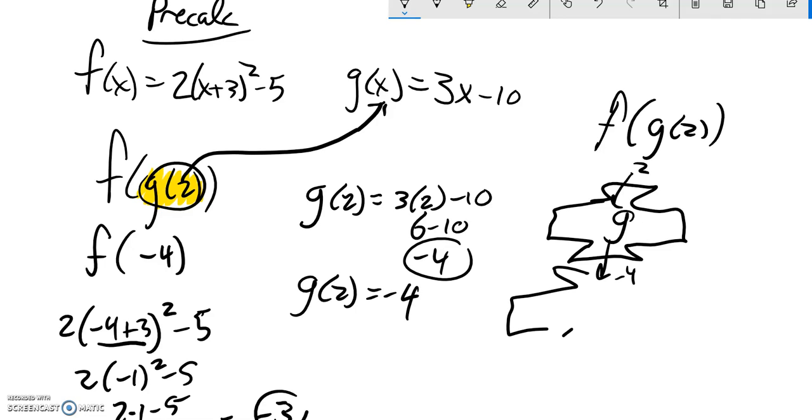And then we took that negative 4 and we plugged it into f. So we did that over here, and it spit out a negative 3.